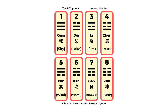So here is the basic Ba Gua, the eight trigrams. You can see the different combinations of the Yin and Yang lines. The Qian has three solid lines, so it's the most Yang. And the Kun has three broken lines, so it's the most Yin.